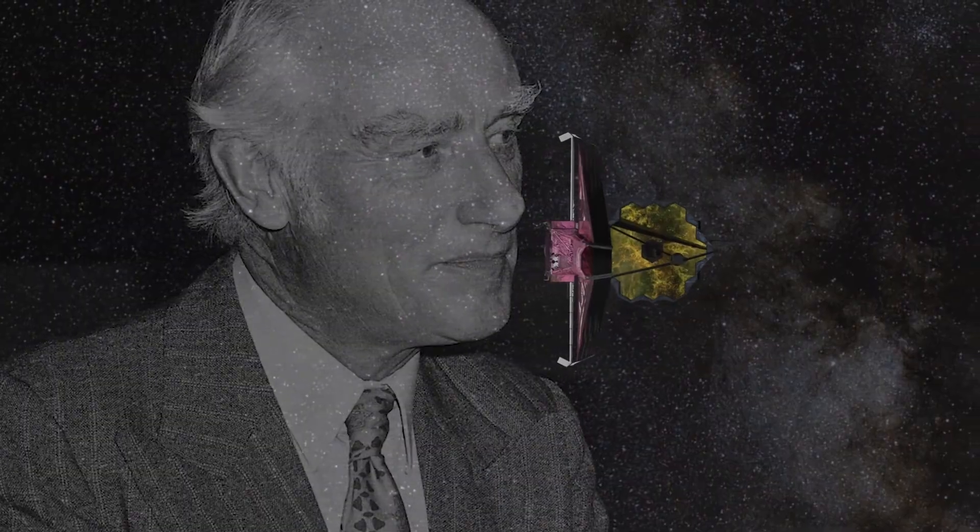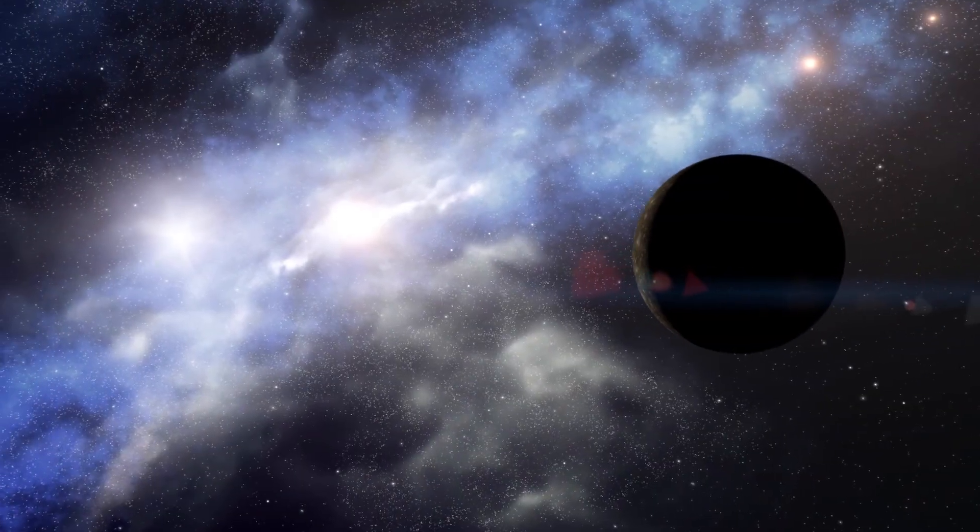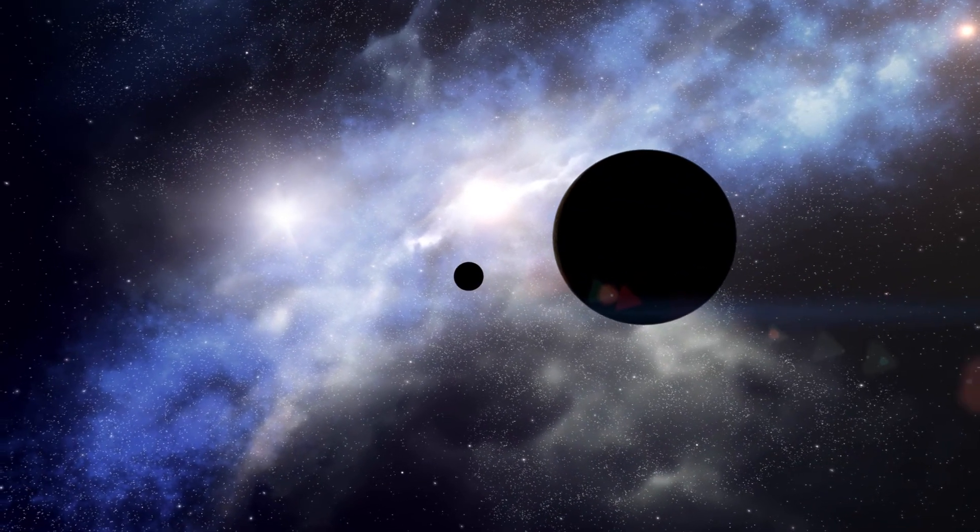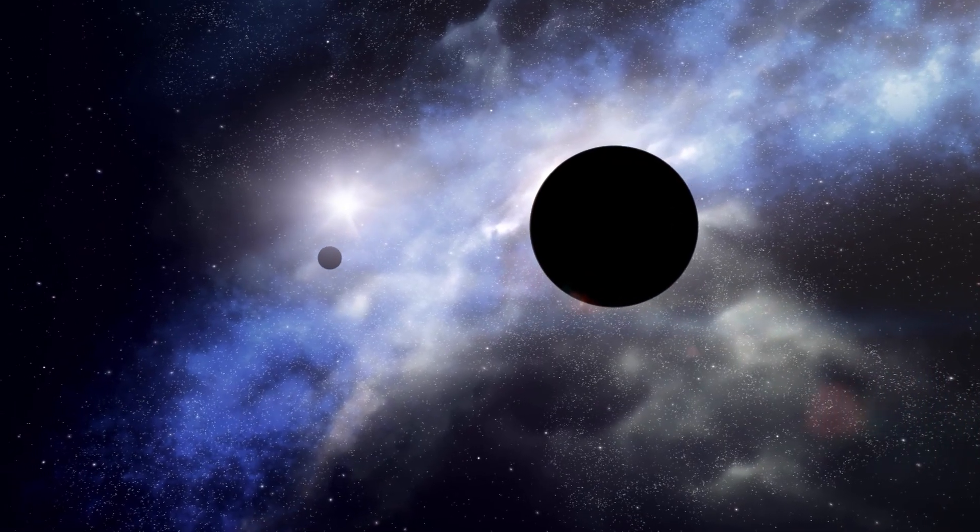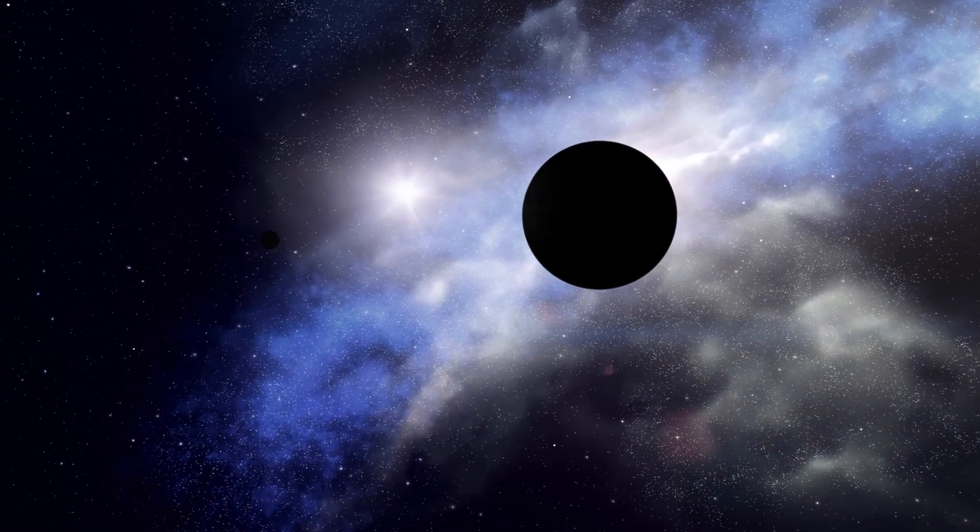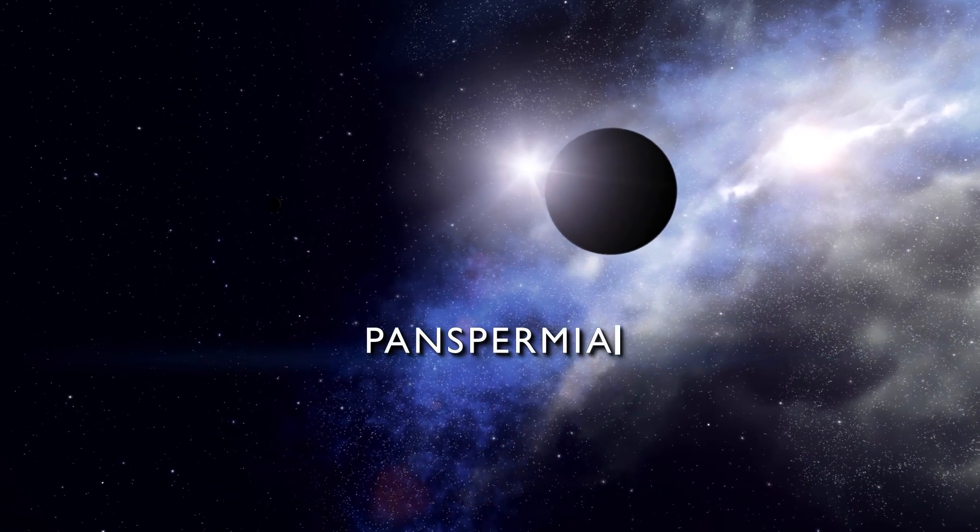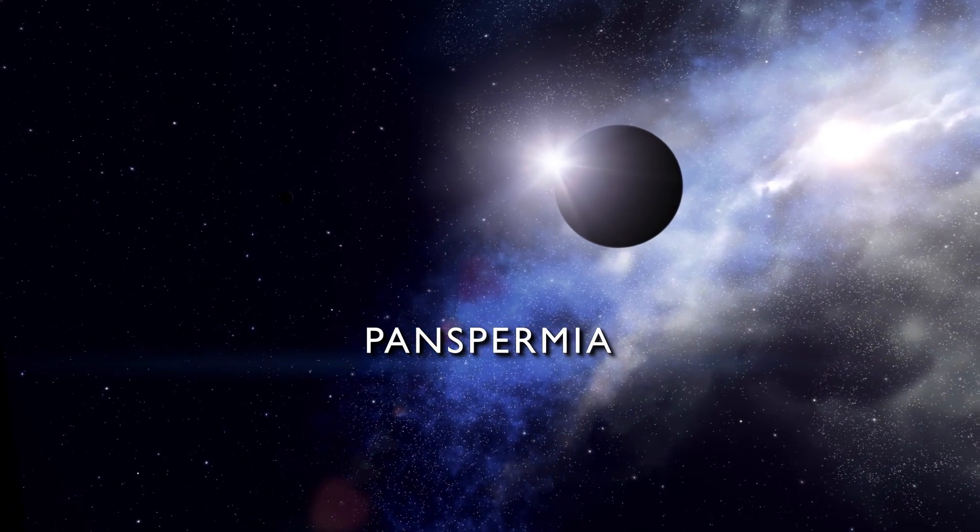In 1976, Nobel Prize-winning biologist Francis Crick advanced a radical alternative for the origin of life. Crick suggested that our planet was seeded with microscopic organisms, transported from another part of the universe by an alien civilization. This theory is called panspermia.